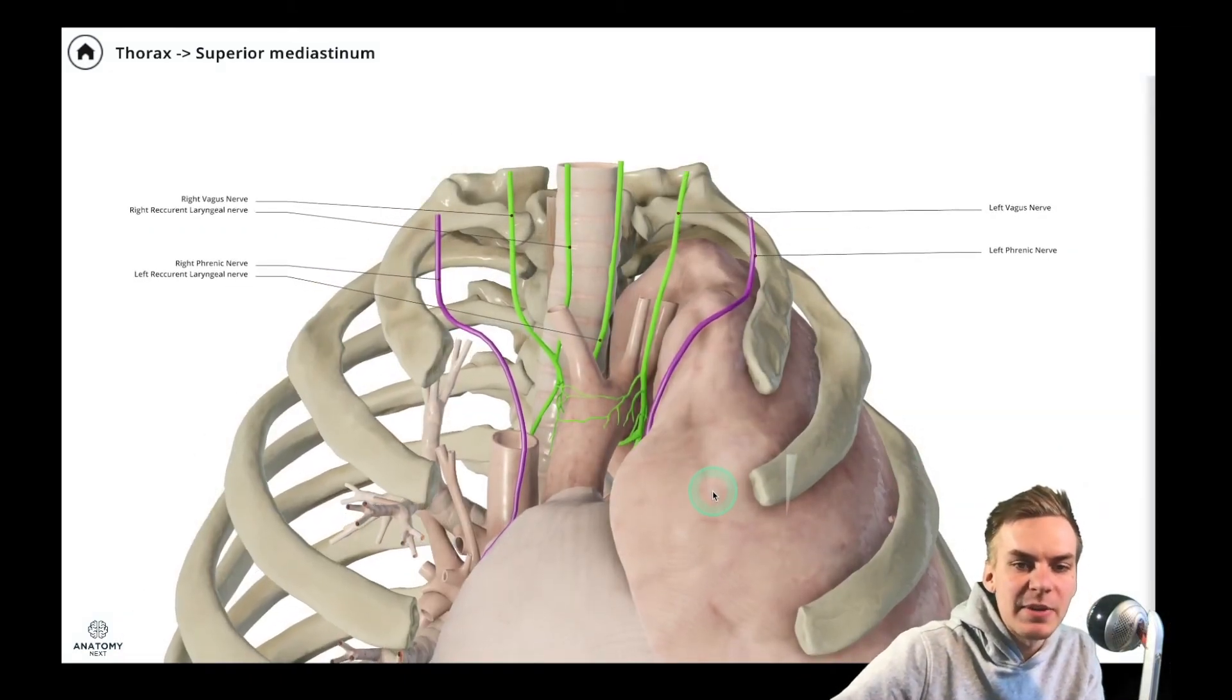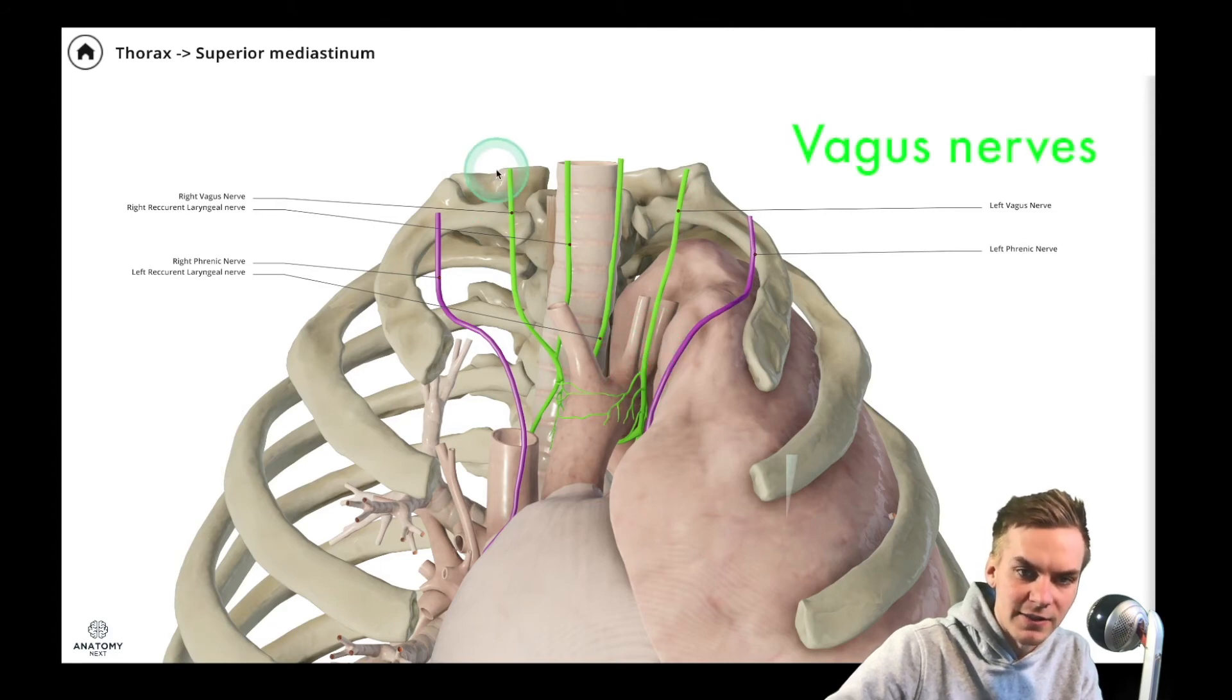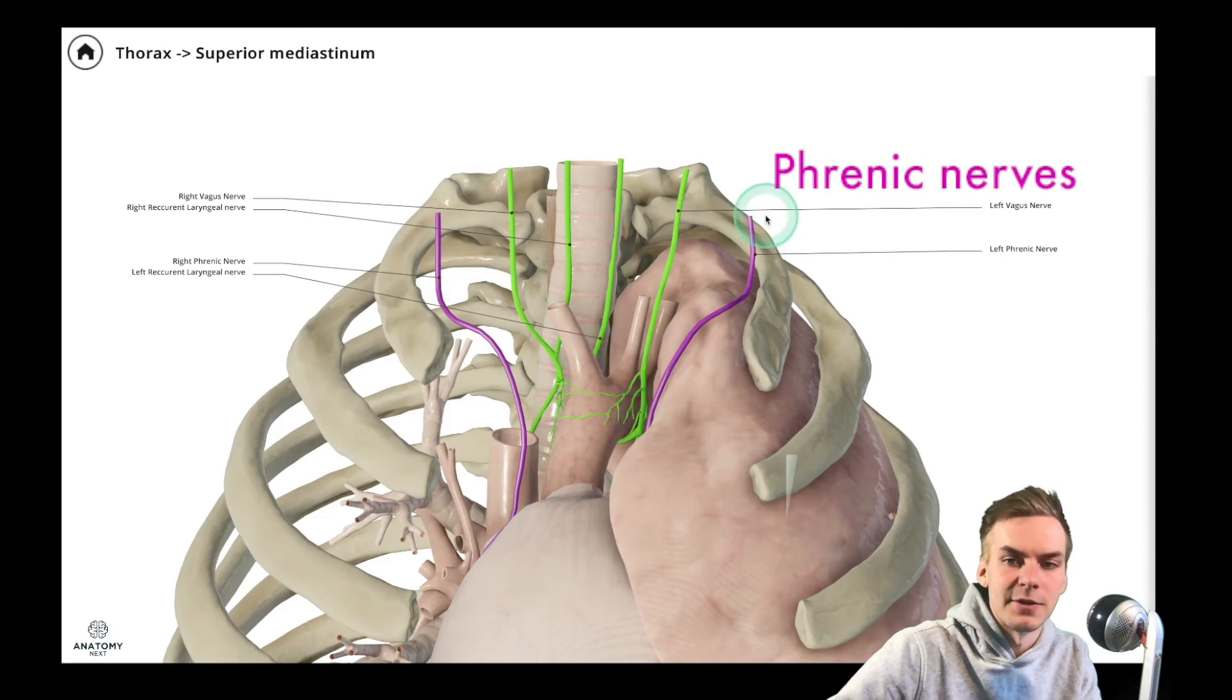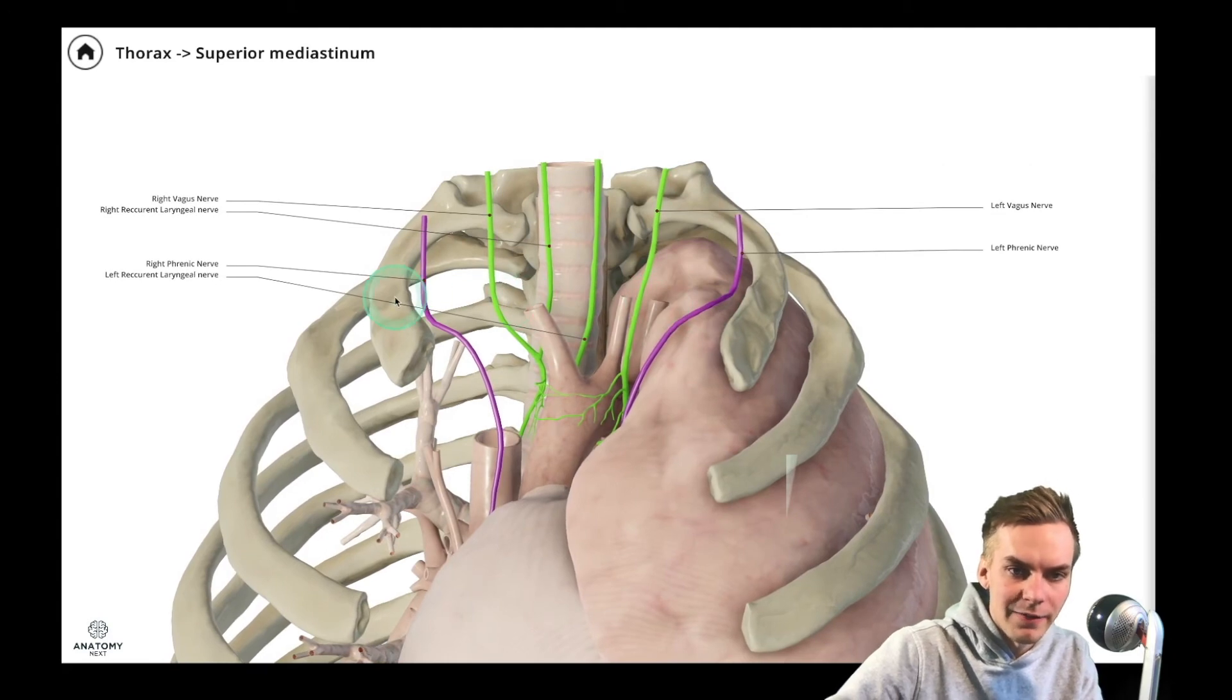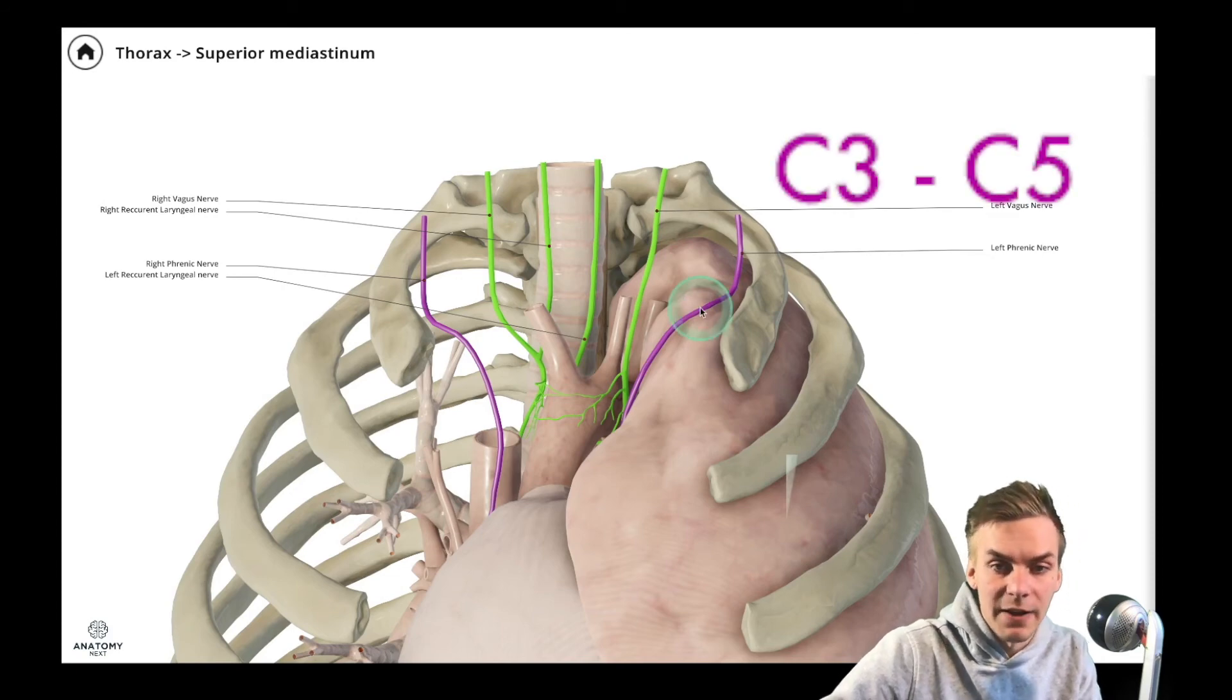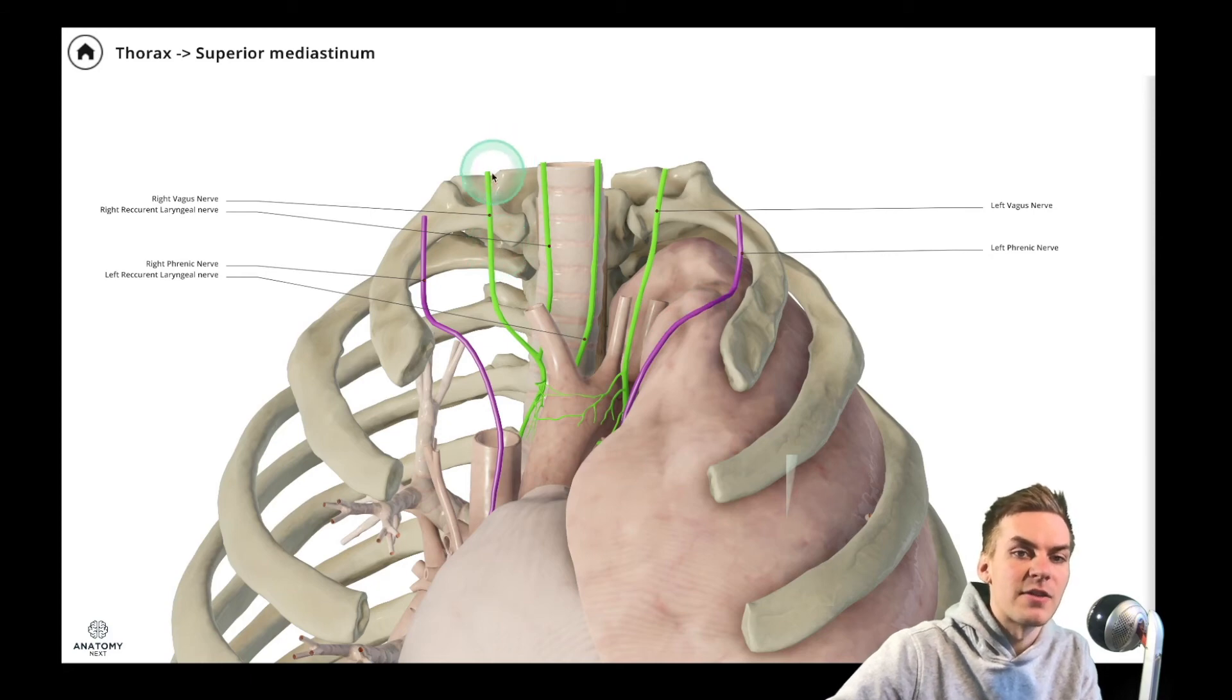Here in the superior mediastinum we can also see some structures belonging to the nervous system and these are the left vagus nerve and the right vagus nerve. And also we can see the right and left phrenic nerve color coded in purple. You must know the difference that the phrenic nerves are coming off the spinal cord at the segments of C3 to C5 directly whereas the vagus nerves are considered to be cranial nerves meaning that they originate from the brain stem.